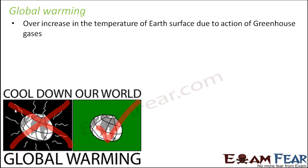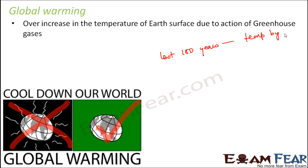If we look at the past records, in the last 100 years the average temperature of the earth has increased by 0.6 degree Celsius. It might seem a very small increase over 100 years, but if we look at it more closely, we see that this entire increase has taken place only in the last 30 years.